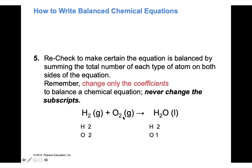Let's balance H₂ + O₂ → H₂O. I'll list how many of each element I have: on the left side — hydrogen 2, oxygen 2; on the right side — hydrogen 2, oxygen 1. Is it balanced? No, because I have two oxygens on the left and only one on the right.